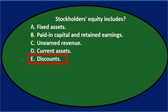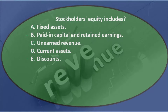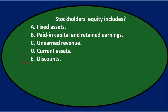E says discounts, which is generally a contra revenue account on the income statement — like a sales discount. In a way you could think of it as related to equity because it closes into net income, which is part of equity. So I'll keep B and E and go through this again: stockholders equity includes either B, paid-in capital and retained earnings, or E, discounts.